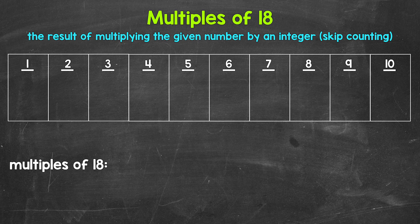So taking a look at the multiples of 18, let's start with 1 times 18. That gives us 18. 18 is the first multiple of 18. Then we have 2 times 18, that's 36. 36 is the second multiple of 18. Next is 3 times 18, that's 54.